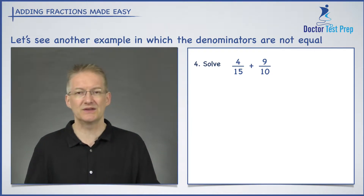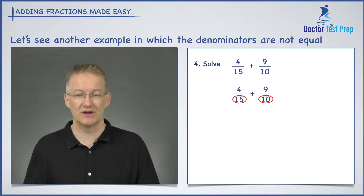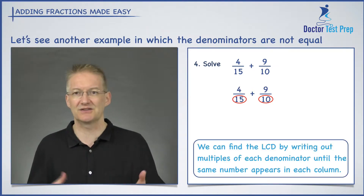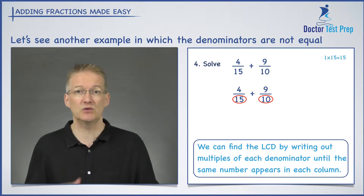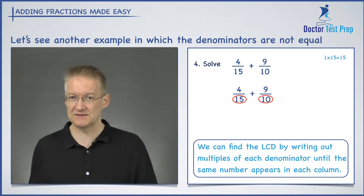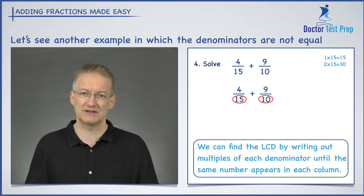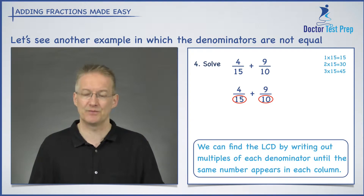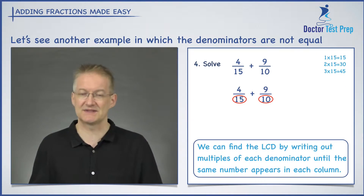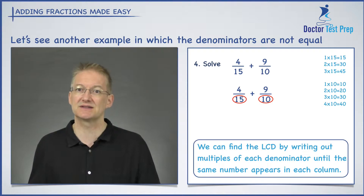The way we can do this is to write down multiples of each denominator — it's almost like the times tables, but for each denominator. So with 15: 1 times 15 is 15, 2 times 15 is 30, 3 times 15 is 45, and so on. Then I do the same thing with the 10: 1 times 10 is 10, 2 times 10 is 20, 3 times 10 is 30, 4 times 10 is 40, and so on.